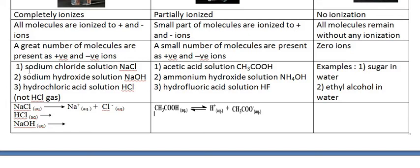Examples of strong electrolytes include sodium chloride solution or molten sodium chloride — molten sodium chloride means the table salt which is heated and converted into a liquid by melting, not by dissolution in water. Both sodium chloride solution and molten sodium chloride are strong electrolytes containing greater numbers of positive sodium ions and negative chloride ions through complete dissociation. Sodium hydroxide solution or molten sodium hydroxide is another example.